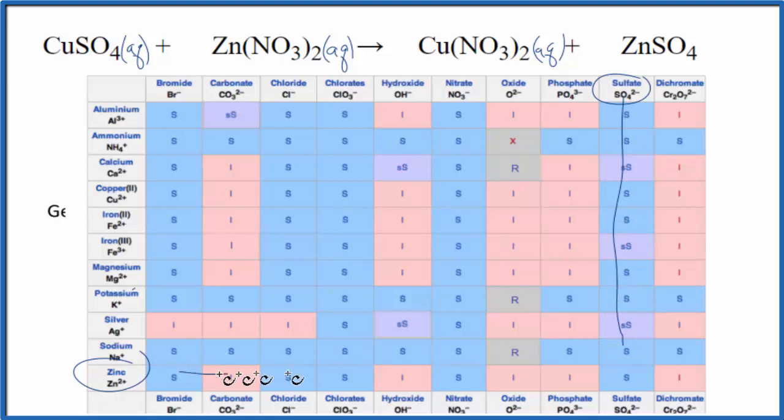You can see most of these are soluble or some slightly soluble. You go down, cross, and that S means it's soluble. So it's going to dissolve in water and dissociate into its ions. It's going to be aqueous. So these are the states.